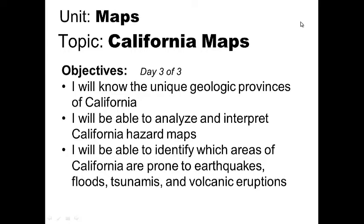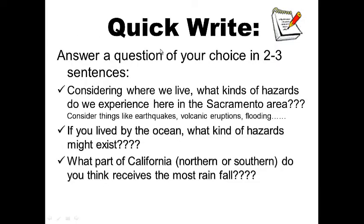For your quick write: considering where we live, what kinds of hazards do we experience here in the Sacramento area? If you lived by the ocean, what kinds of hazards might exist? Which part of California — northern or southern — do you think receives the most rainfall? Go ahead and pause this while you do your quick write for five easy points.